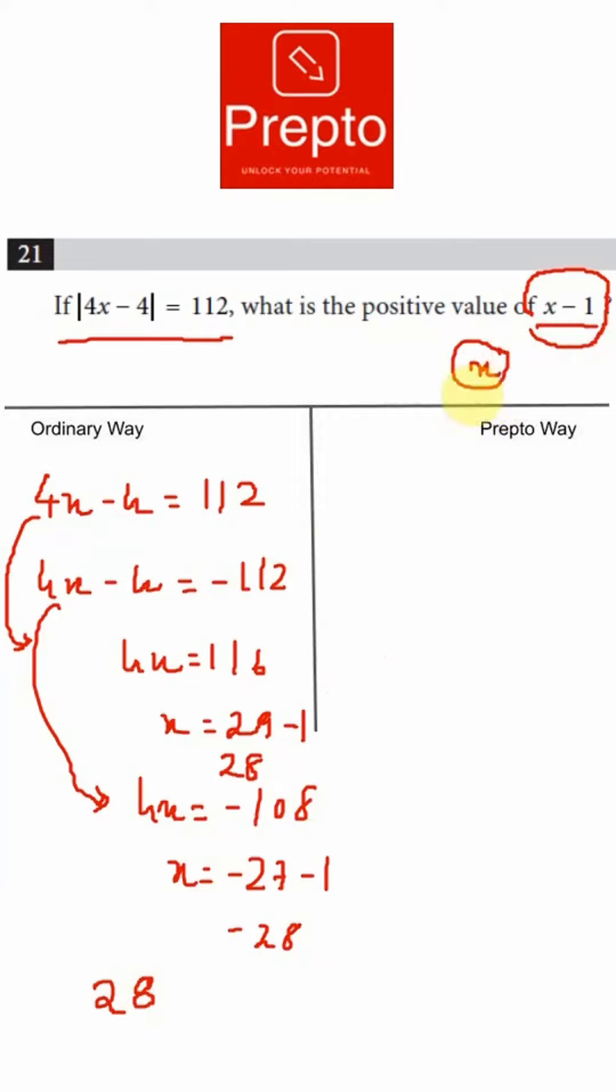The connection with x minus 1 and what is given is that this modulus is 4 times mod of x minus 1. 4 is positive, so I can remove it outside the modulus.